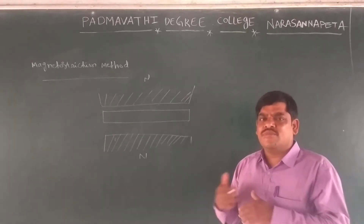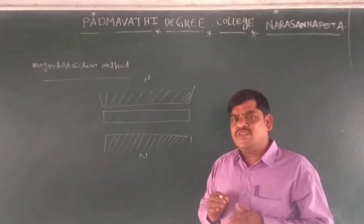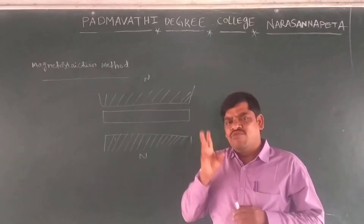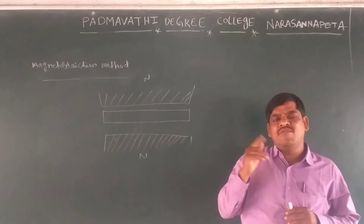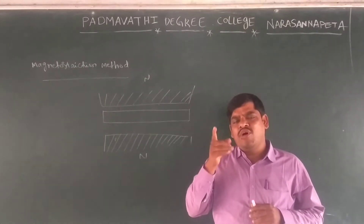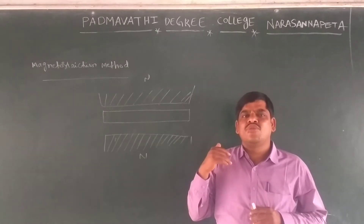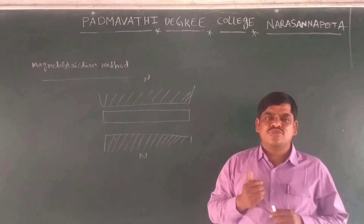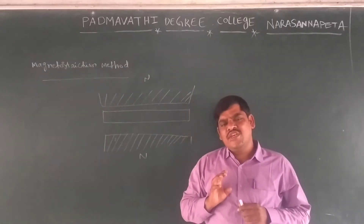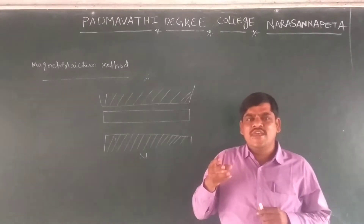The magnetostriction method is shown here. What is resonance? If two bodies have the same frequency and one body vibrates, the second body vibrates with maximum amplitude. This phenomenon is called resonance.